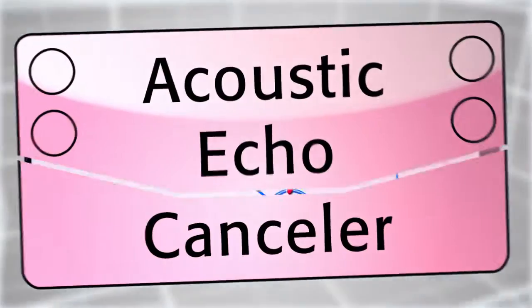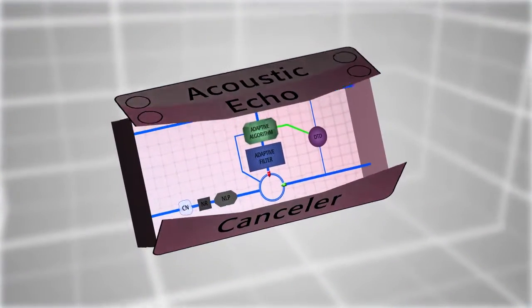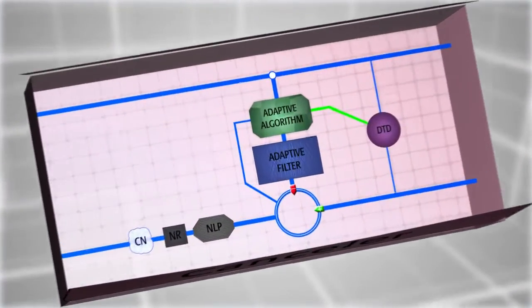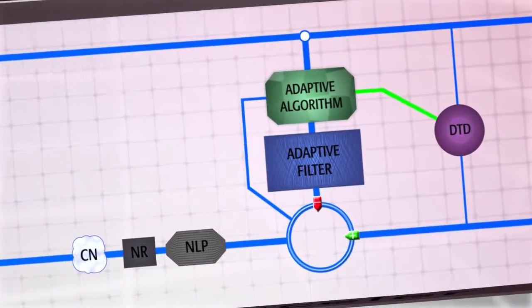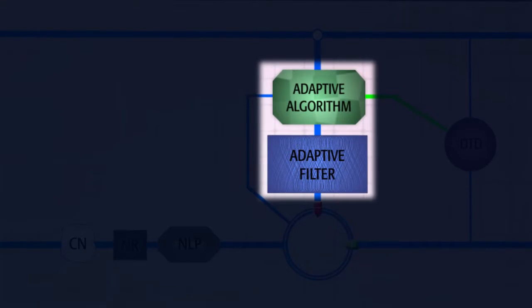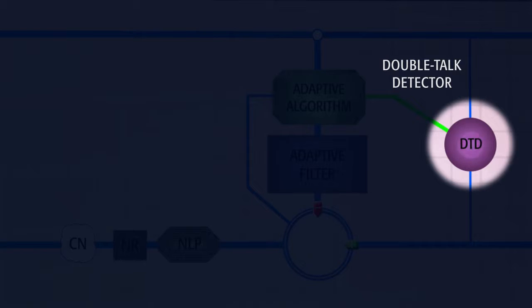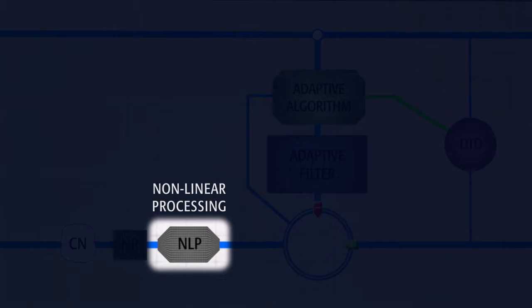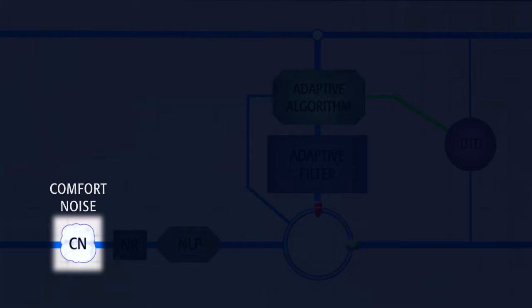Here's a diagram of this audio signal's round trip journey. You'd never know it from the outside, but the acoustic echo canceler puts the audio signal through a lot of subsystems, including the adaptive filter and adaptive algorithm, double talk detection, non-linear processing, noise reduction, and comfort noise.